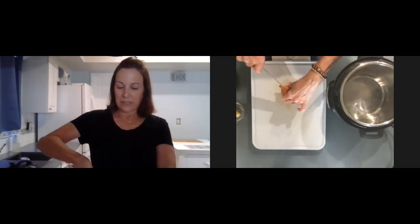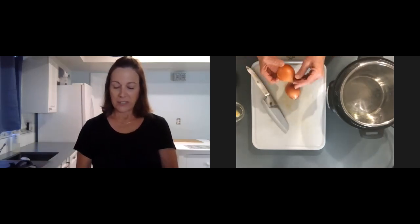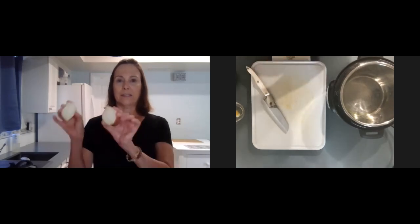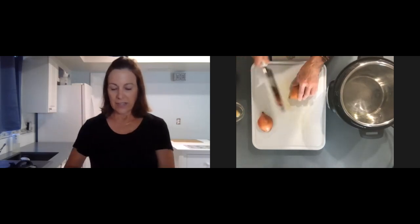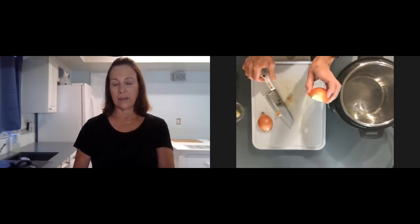So I'll cut the onion. I'm going to show you how to get nice even dice with the onion. First thing I do is cut it in half. You can see I just cut it in half and I'm going to cut off only one end.